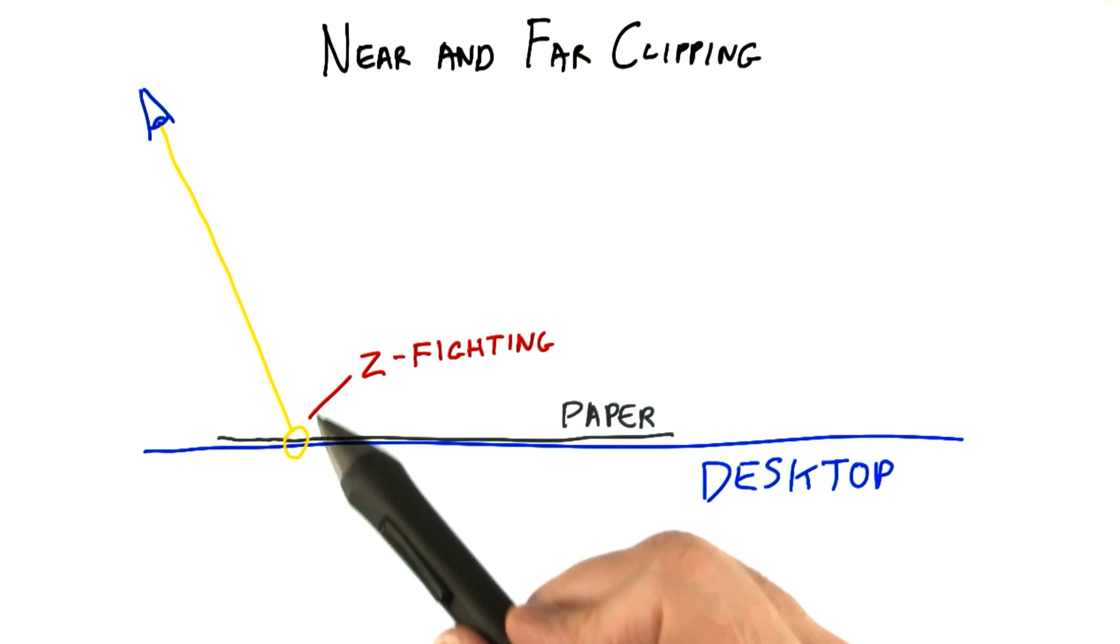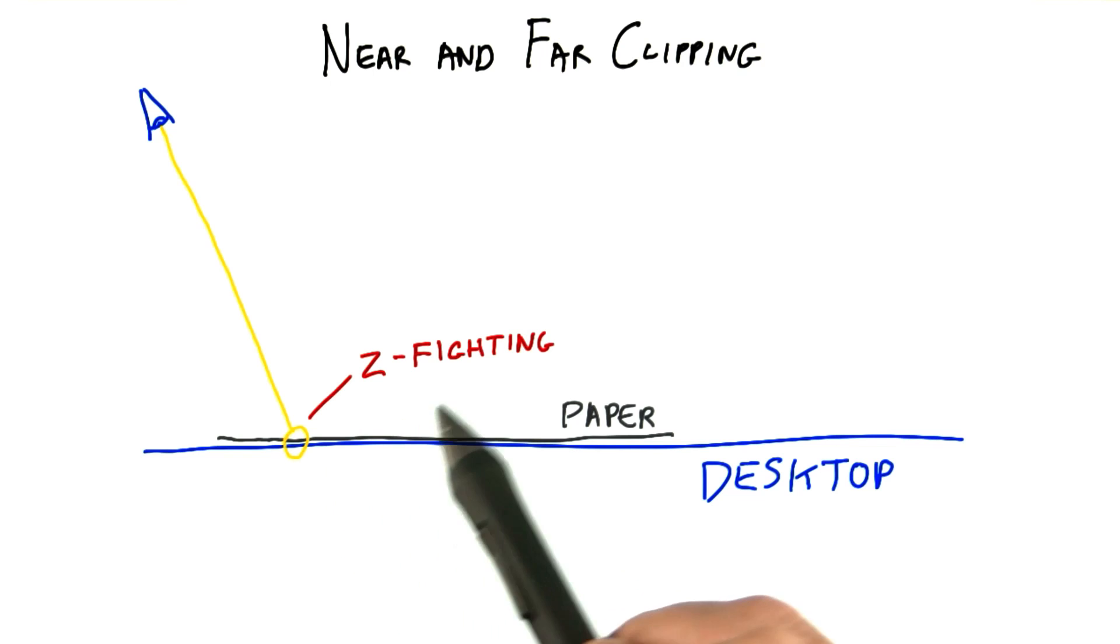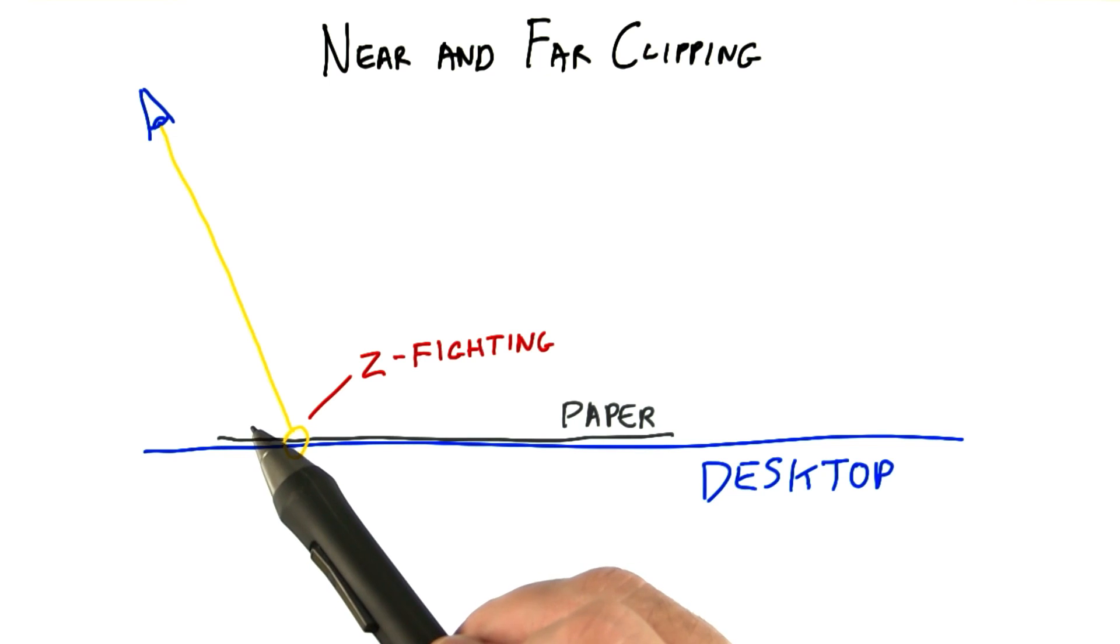For example, if you're rendering a sheet of paper on top of a desk, you can easily get z-fighting, even if you've modeled everything correctly and the sheet is slightly above the desk. At some pixels, the z-value of the paper and the desktop will have the same value, and the desktop can then bleed on through.